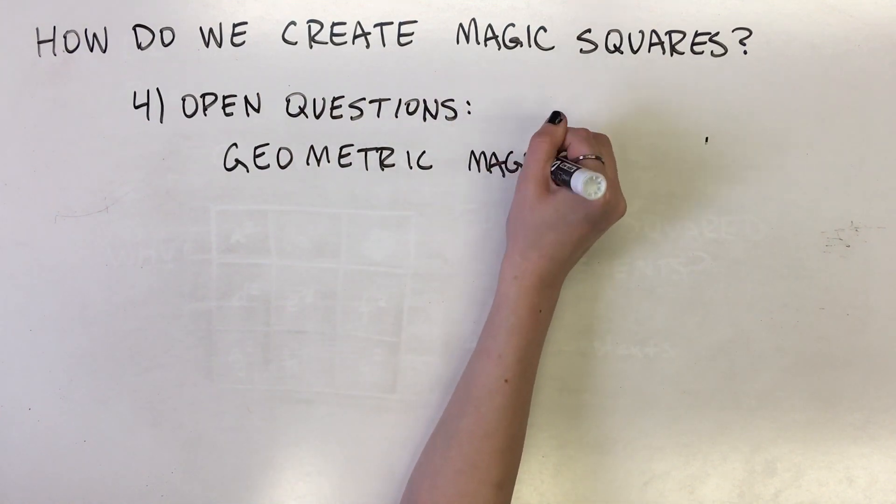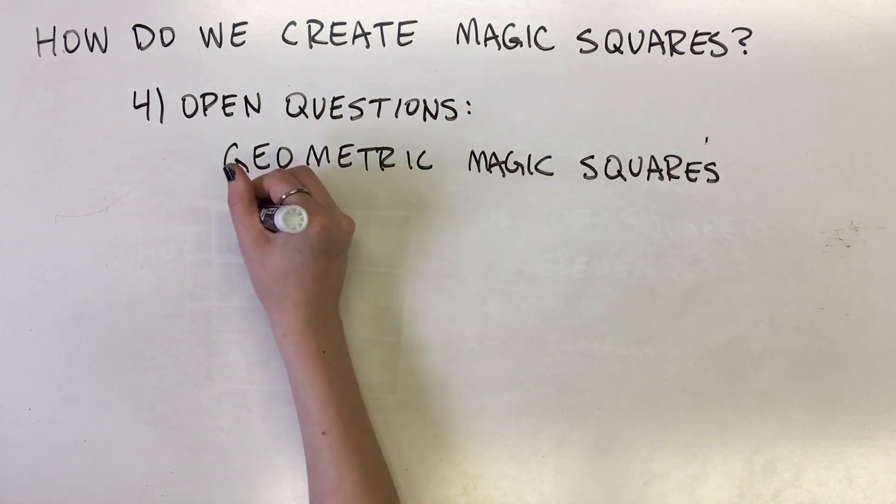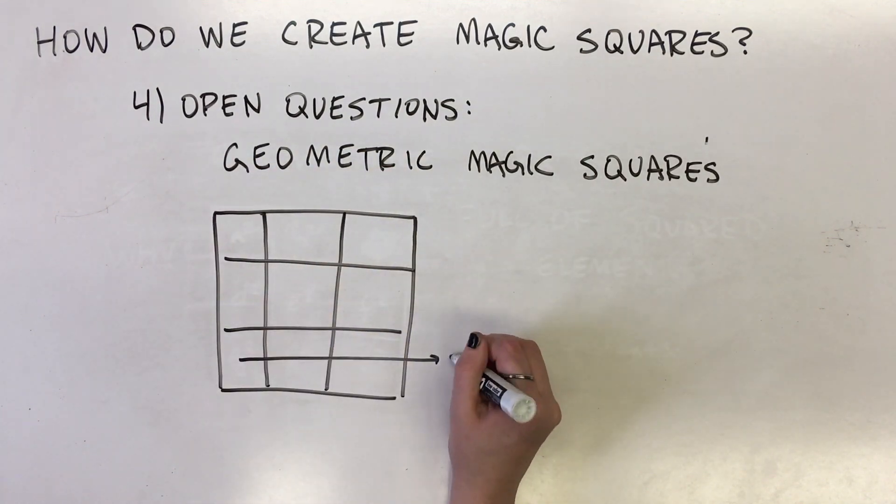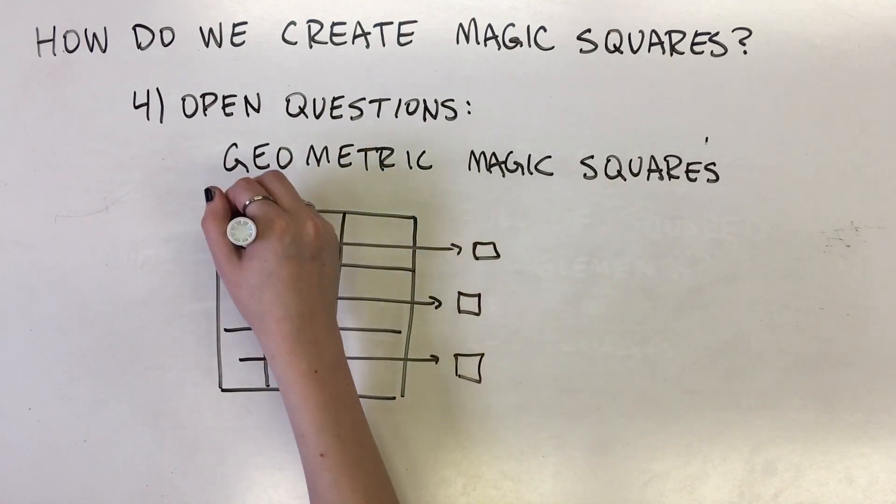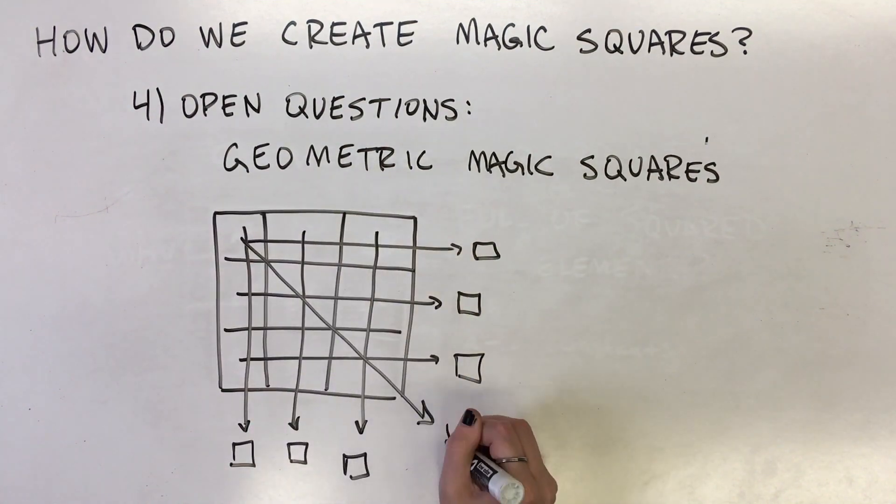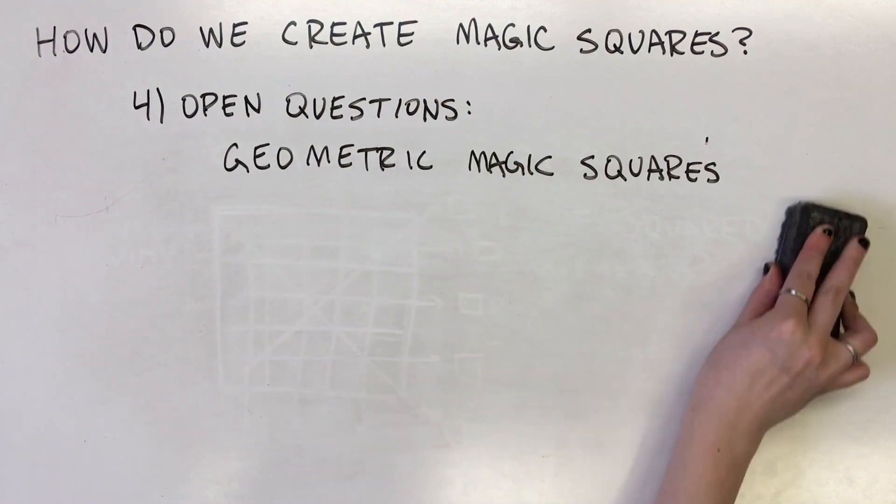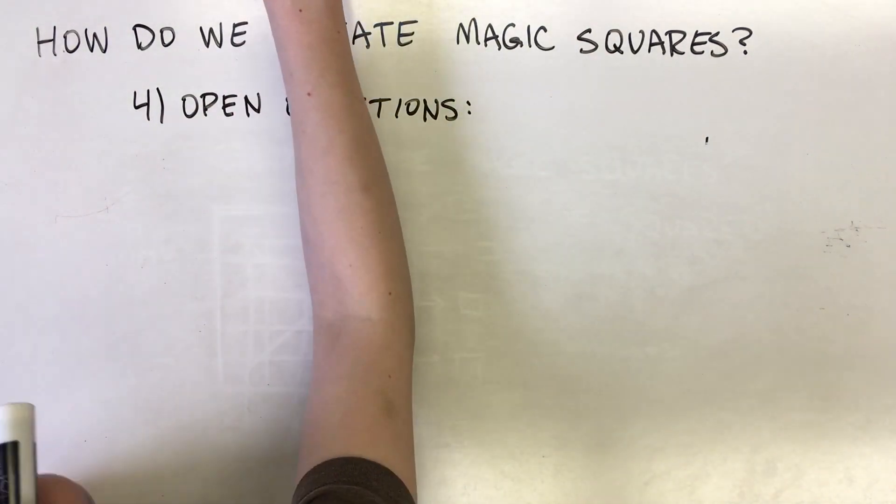An interesting variation on the magic square is the geomagic square, first invented by Lee Sallows in 2001. Rather than integers, the cells of geomagic squares hold shapes that can be fitted together to form the same target shape using the row, column, and diagonal entries.